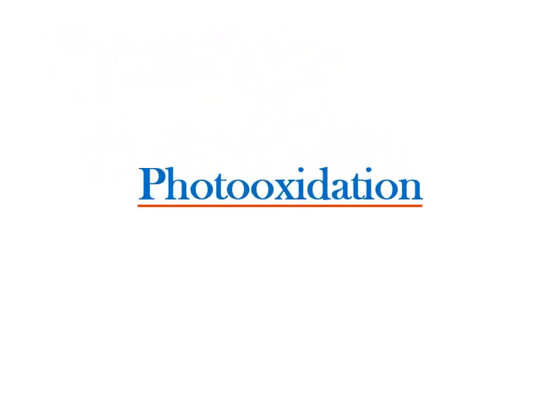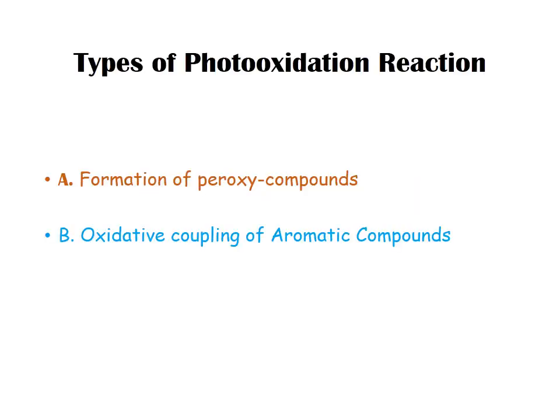Welcome to the next module on organic photochemical reactions — photo oxidation reactions. Today we will discuss different types of photo oxidation reactions with suitable examples. There are two types: first, formation of peroxy compounds, and second, oxidative coupling of aromatic compounds. We will discuss them one by one.